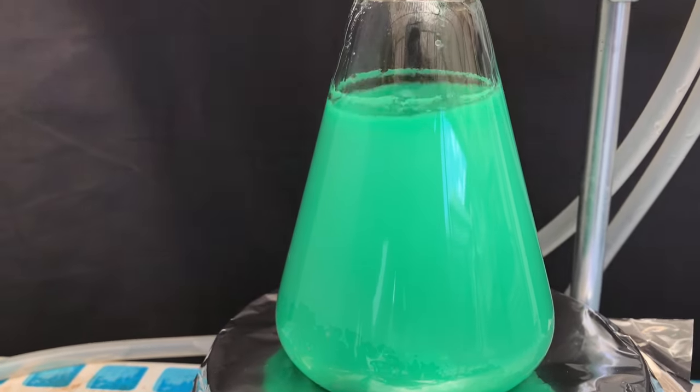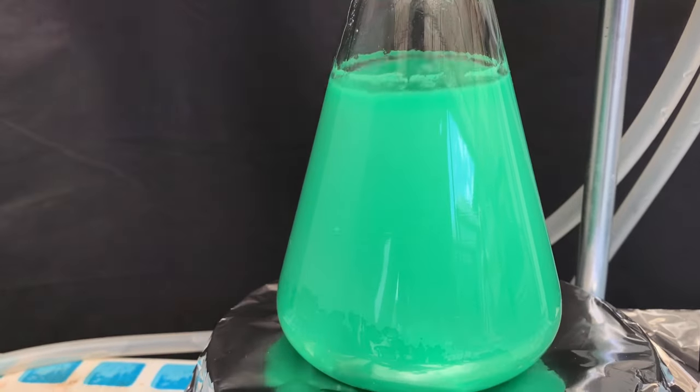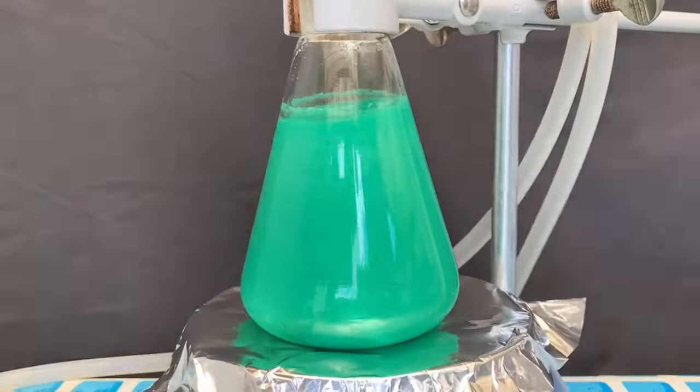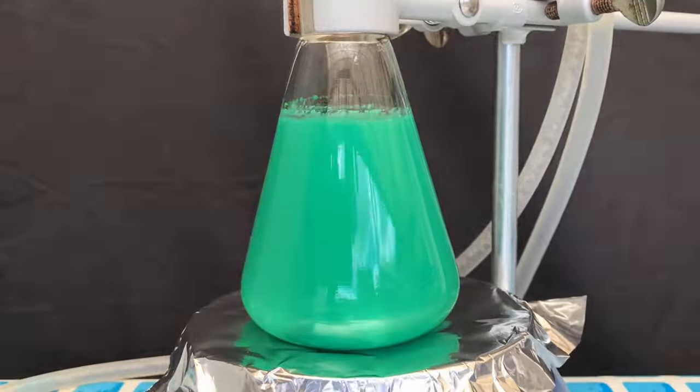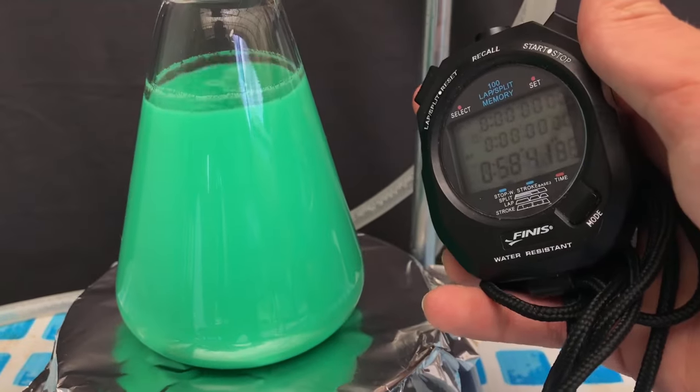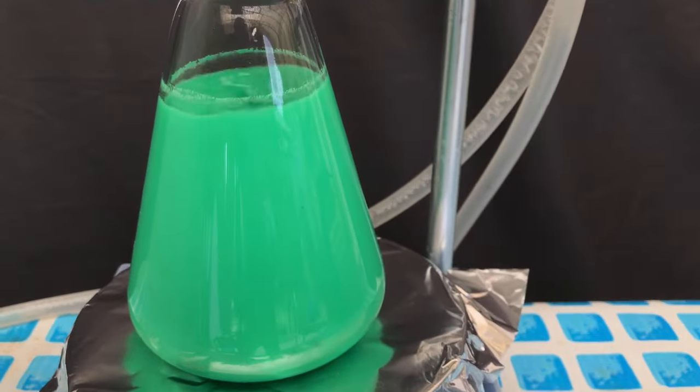As the mixture heated up, it rapidly changed its color from blue to green. Refluxing for an entire hour even allowed large flakes of arsenic 3 oxide to dissolve and react. Nearly 1 hour has passed now, it's time to stop.